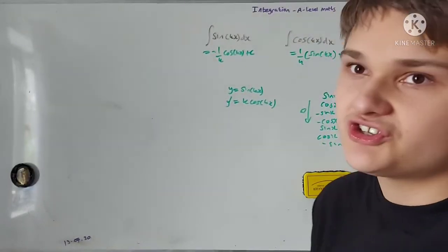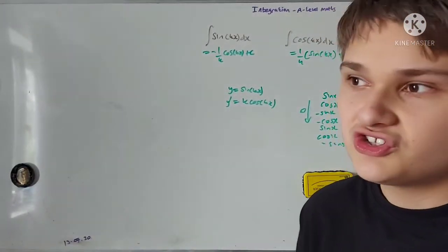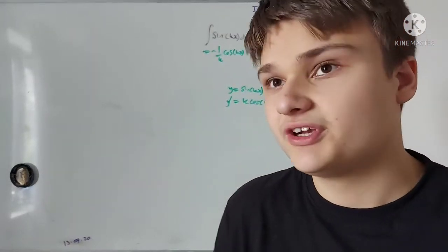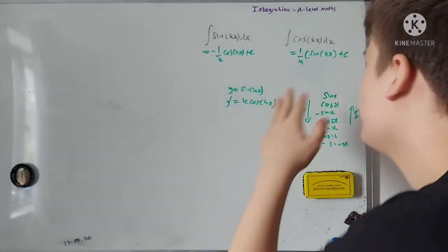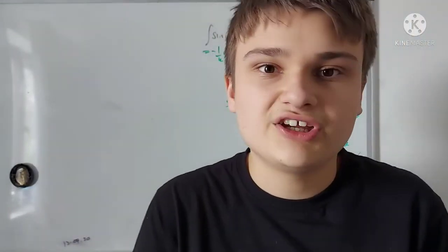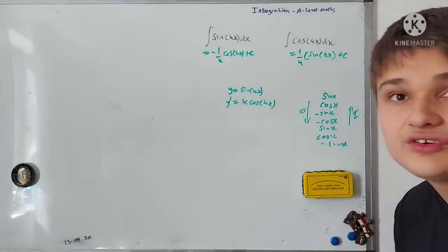Now cosine 2x, you might want to replace with cosine squared minus sine squared. If you wanted to integrate things like sine squared, you'd have to use your double angle formula, and then you'd have to use that formula to integrate cosine 2x from your double angle formula. So this is where all that trig and modelling from chapter 8 of Pure Year 2 can be quite helpful when you're looking at integrals like this.